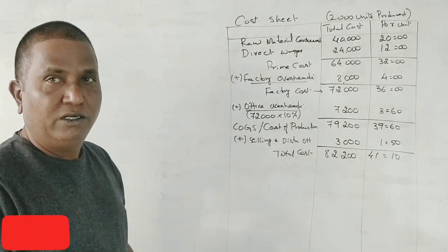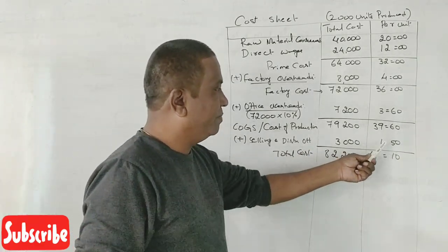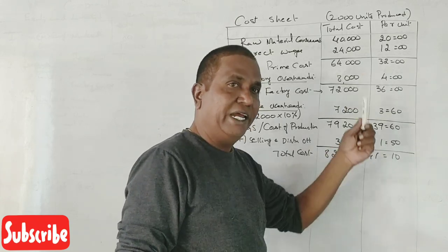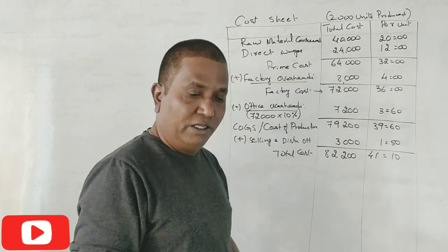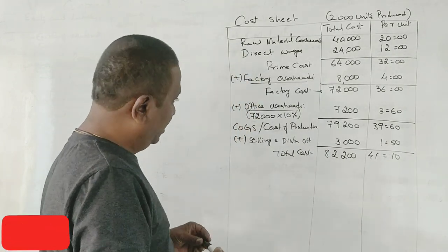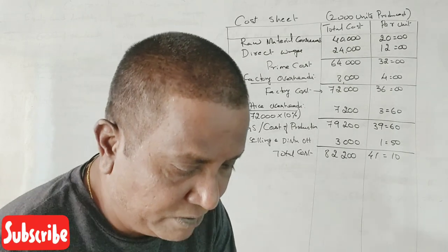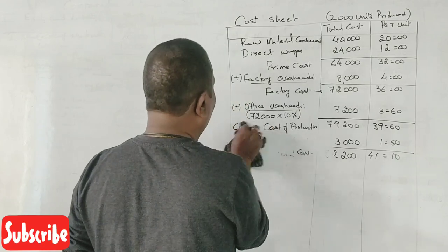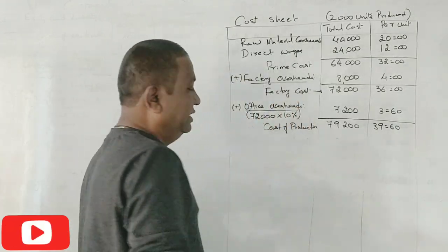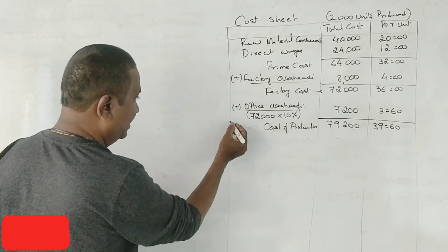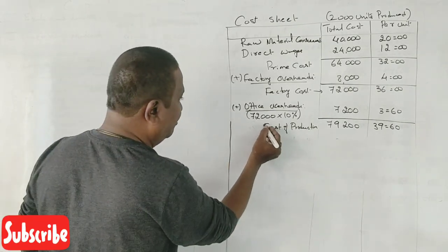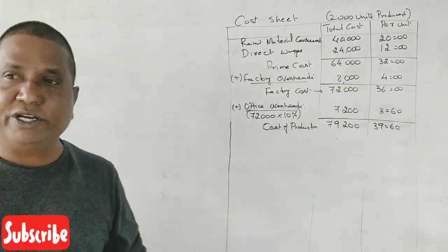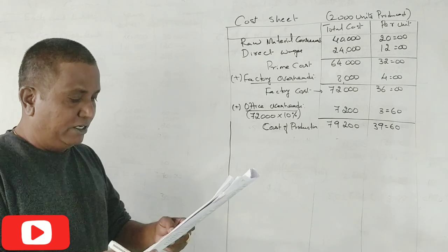Now, one small mistake we have done. I will show you what it is. This you don't call it as cost of goods sold. This is the cost of production. So, this cost of production, before going further, we have to read the question. Please read the question, last paragraph.